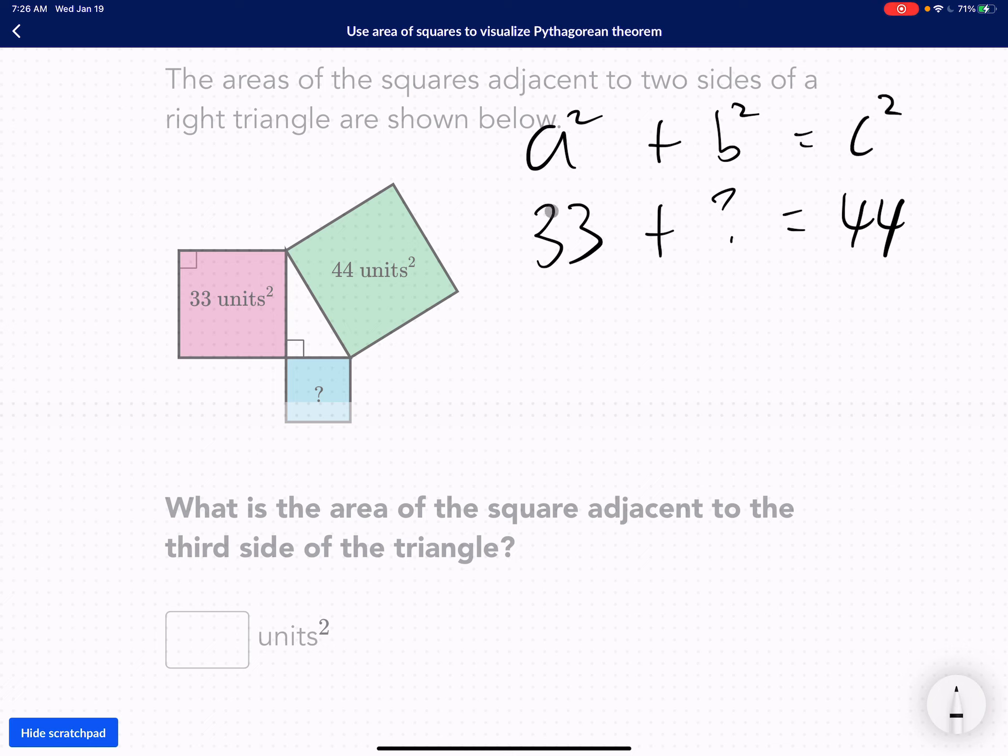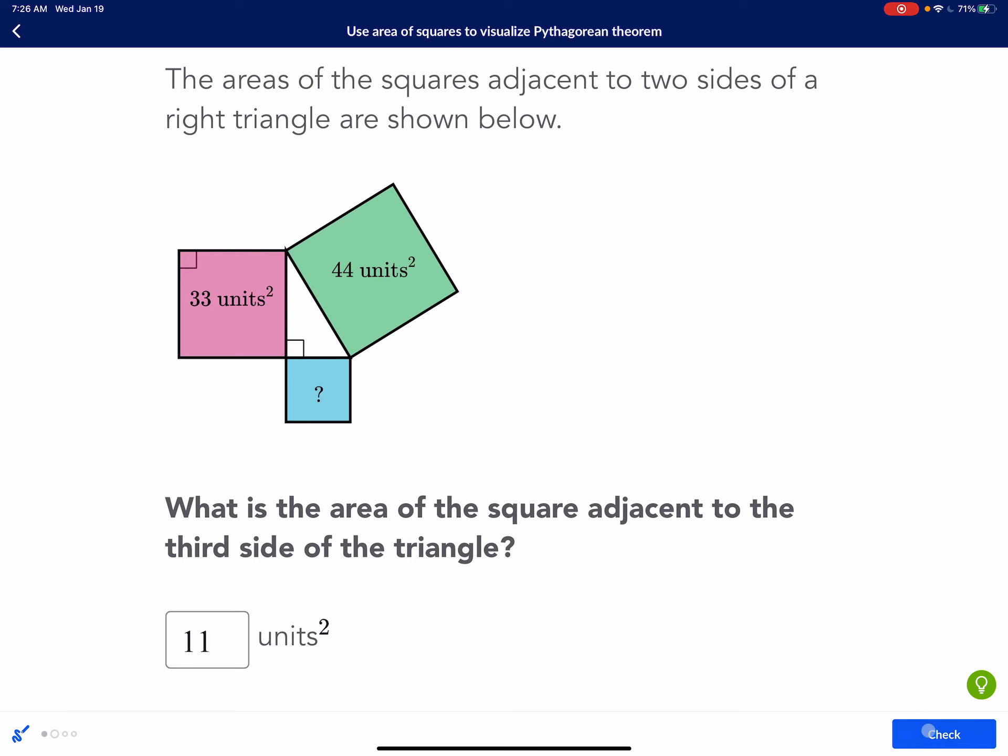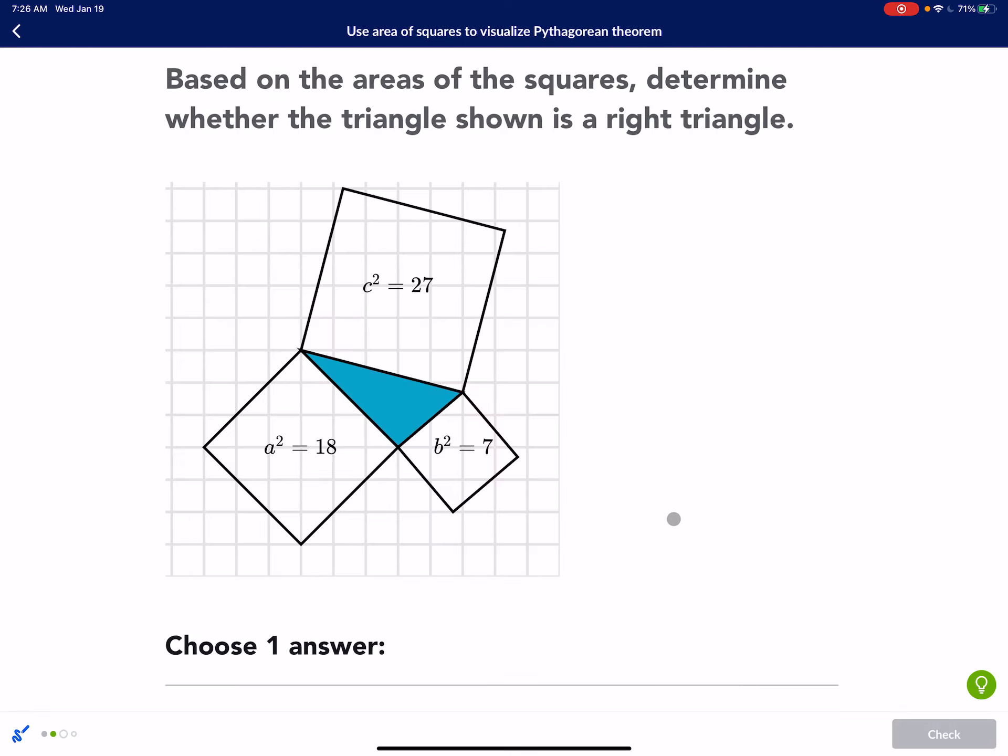So if this is 33 and this is 44, how do we get this number? 33 plus 11 is 44, or we could just subtract 33 on both sides. And we could get the question mark is 11. So my answer is 11 units. And that's the area. Before, we found the side length, but this time we found the area. All right, let's take a look at this one.